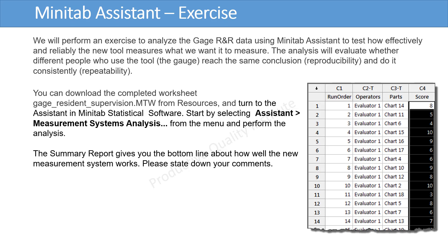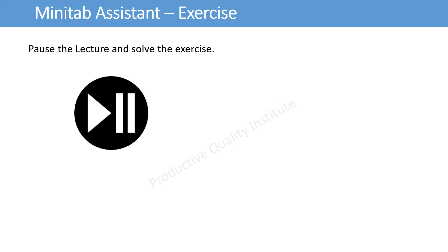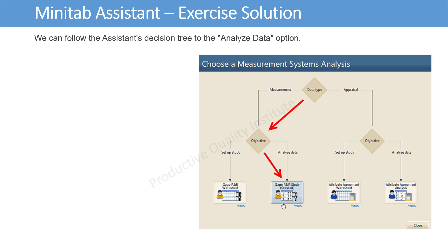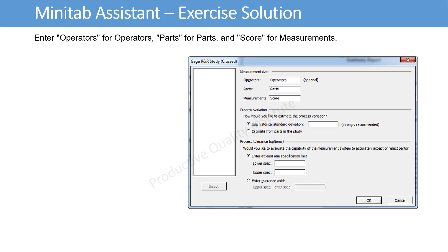Please note down your comments. Please pause the lecture and solve the exercise. We can follow the Assistant's Decision Tree to the Analyze Data option. Enter Operators for Operators, Parts for Parts, and Score for Measurements.